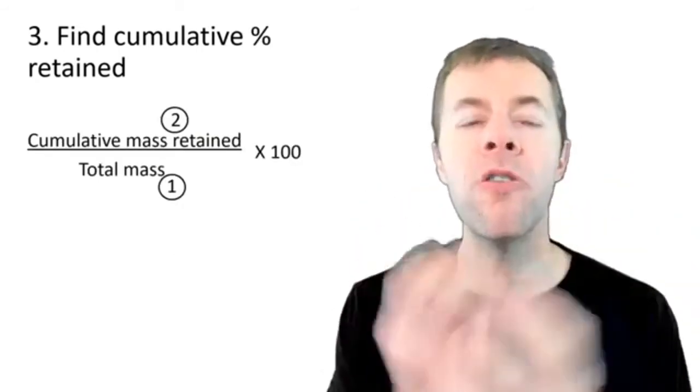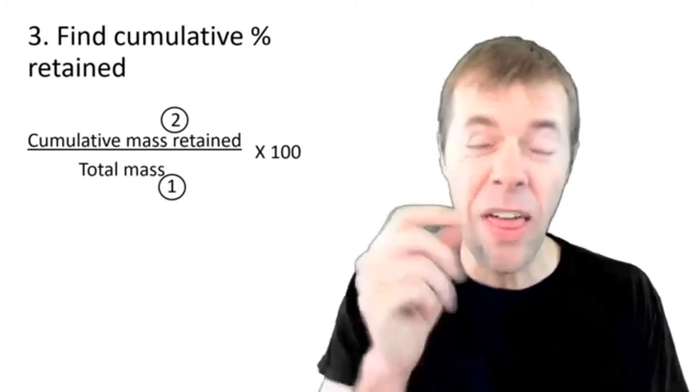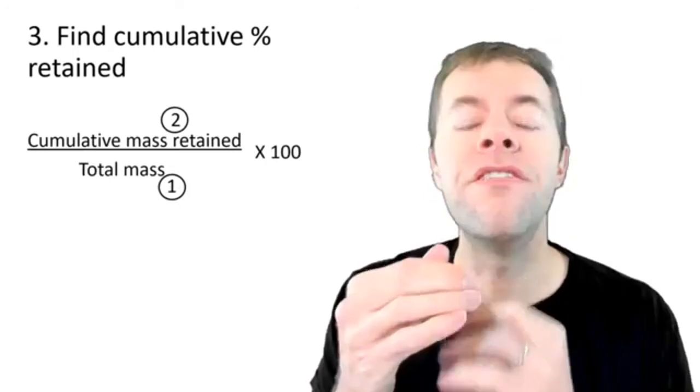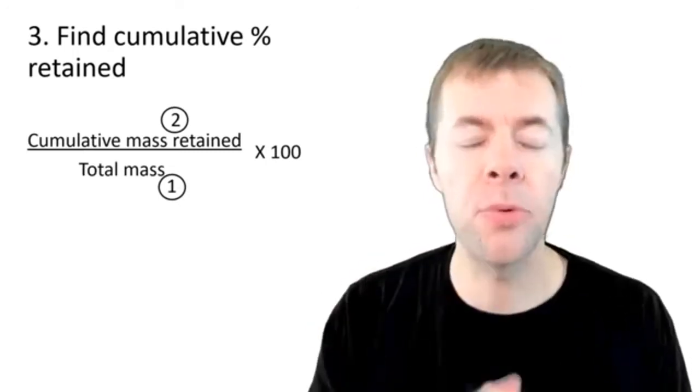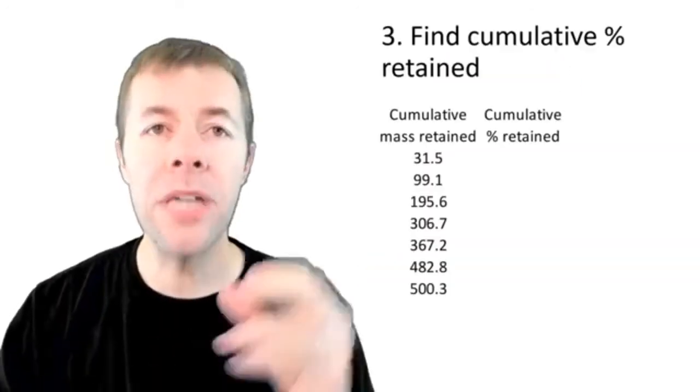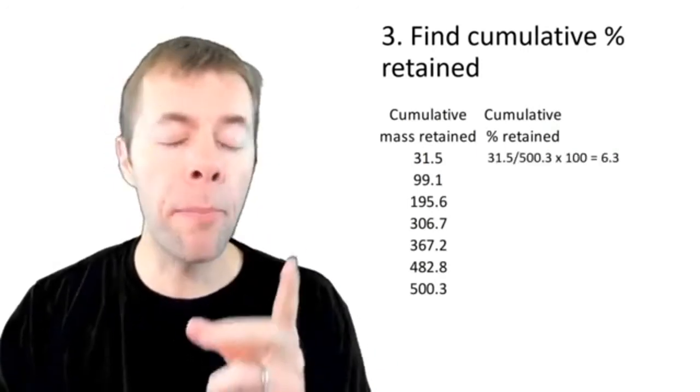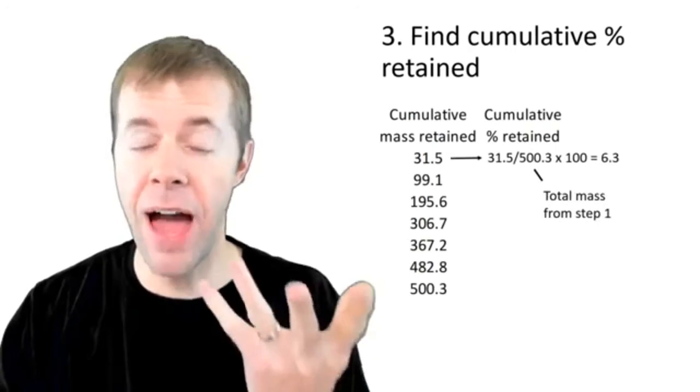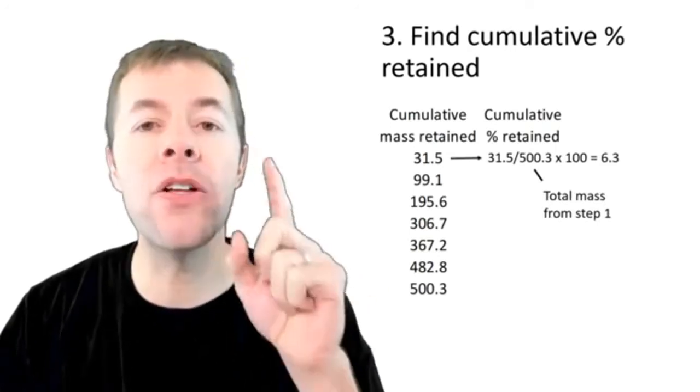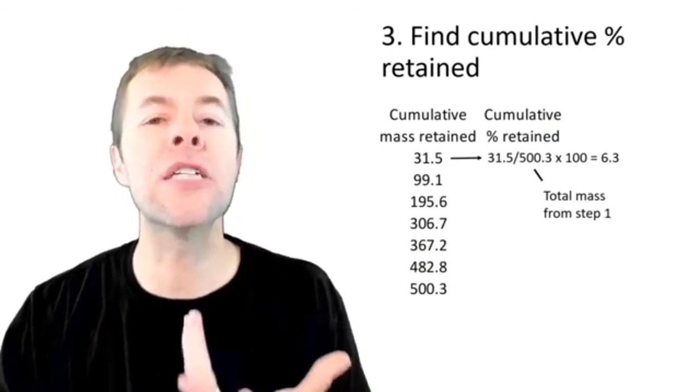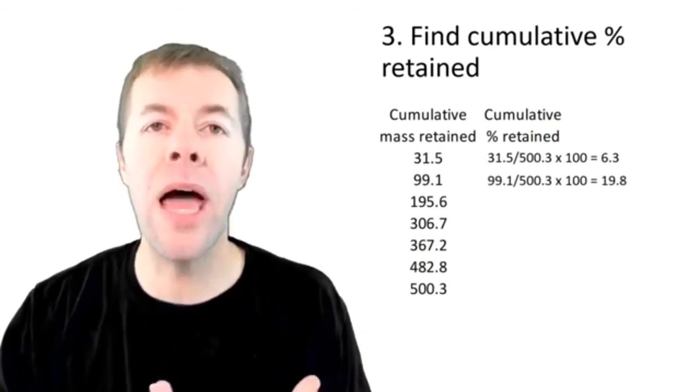Next, we find our cumulative percent retained on each sieve. That's just the value we previously calculated for each sieve divided by the total mass times 100. Let me show you what I'm talking about. I'm going to take that previous column we just calculated, take 31.5, that's coming from that value right here, and divide it by the total mass. That's from step number one. Multiply that by 100 and I get 6.3%.